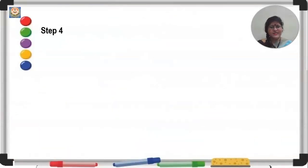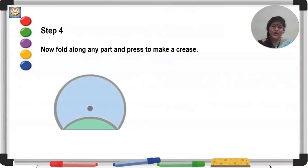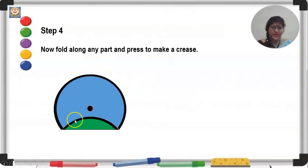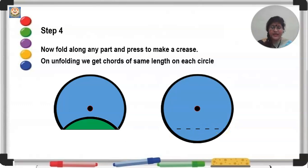After having stacked these circles, make a crease on them. Fold along any part to get a chord. The green circle is at the bottom. When you fold it, you will get a crease like this. You will find this crease on all 4 circles because you have stacked and pressed them together. You could get this crease by keeping a foot ruler on the paper and pressing along it to get the line. Separate the 4 papers.